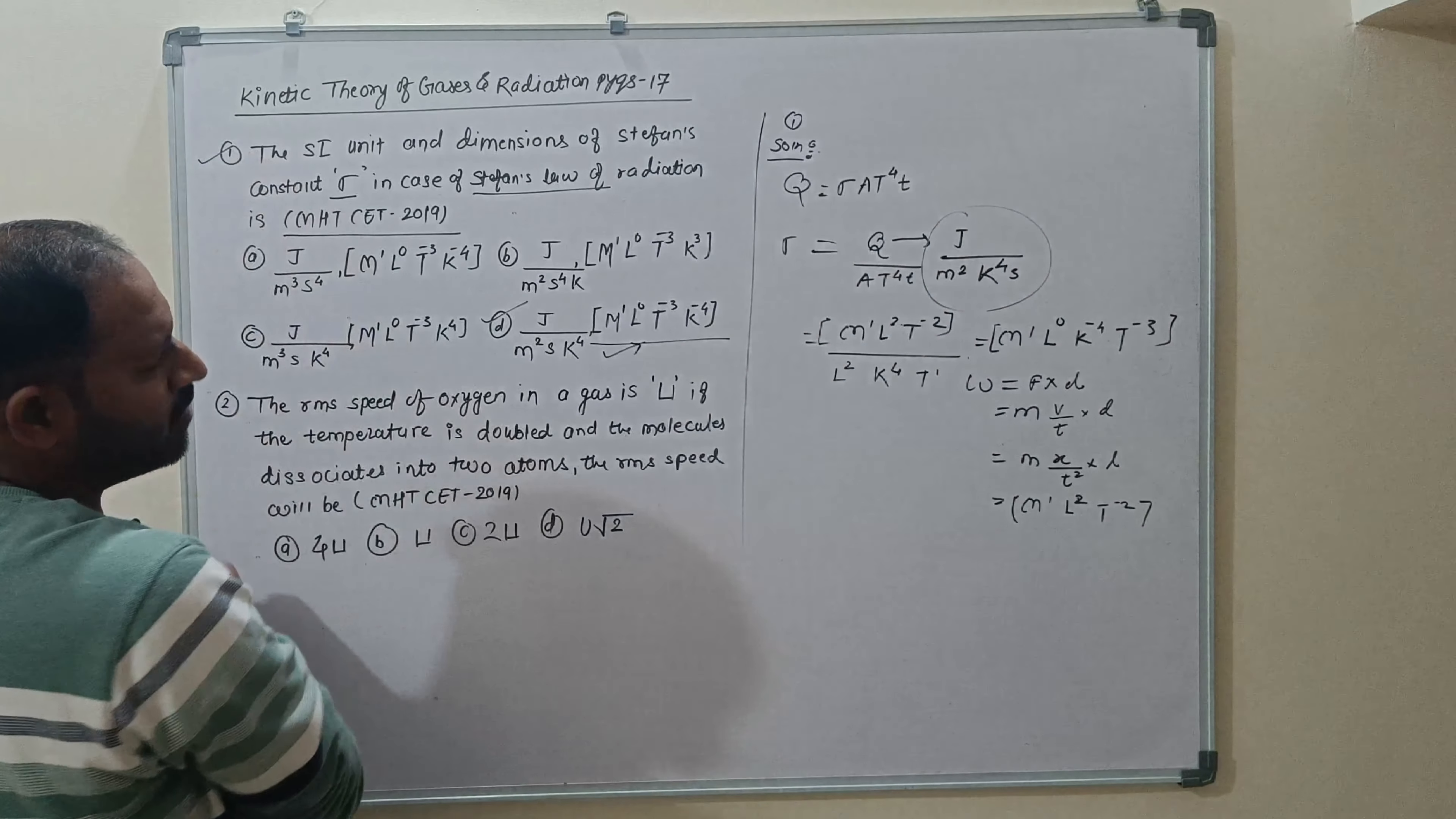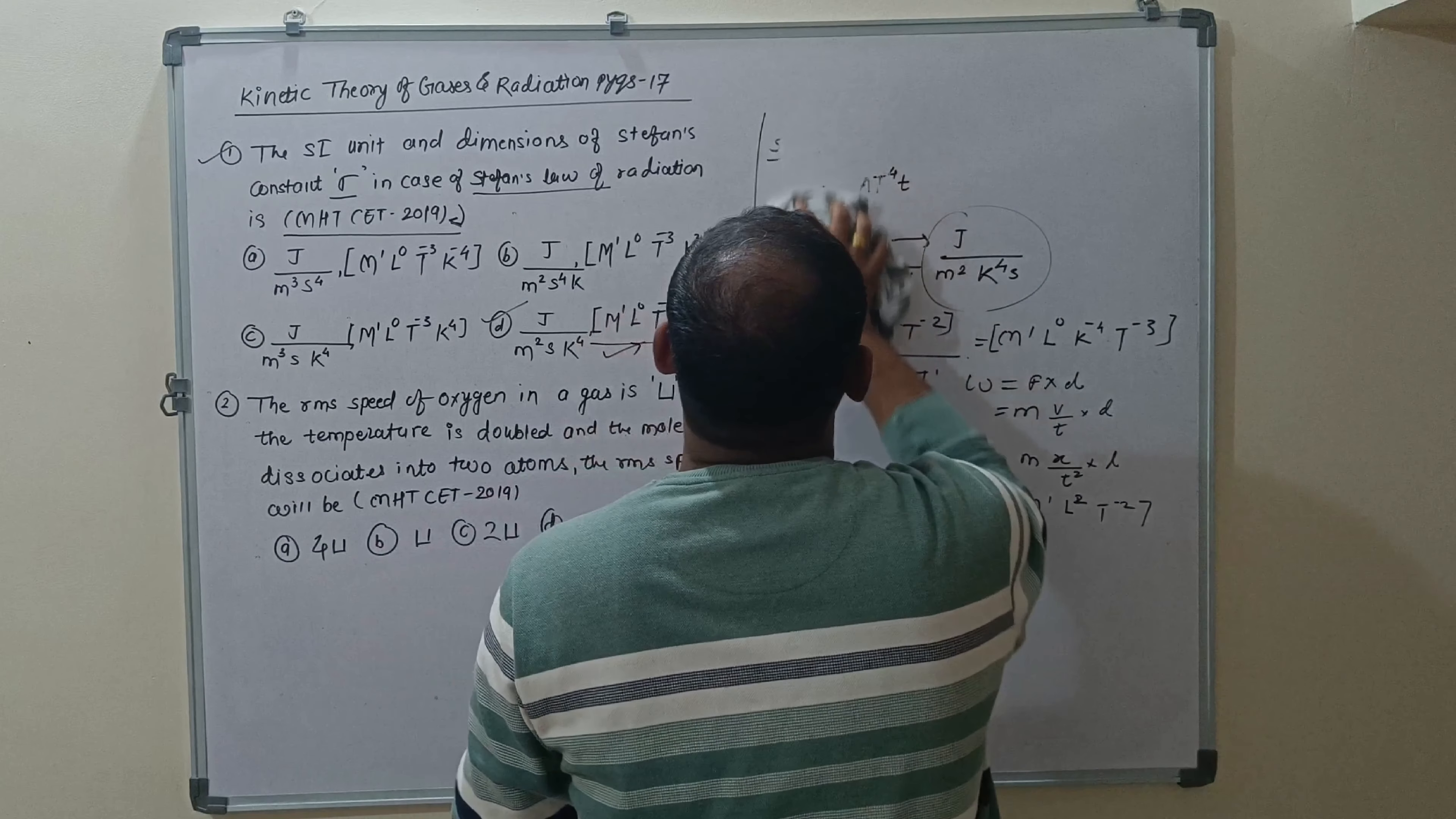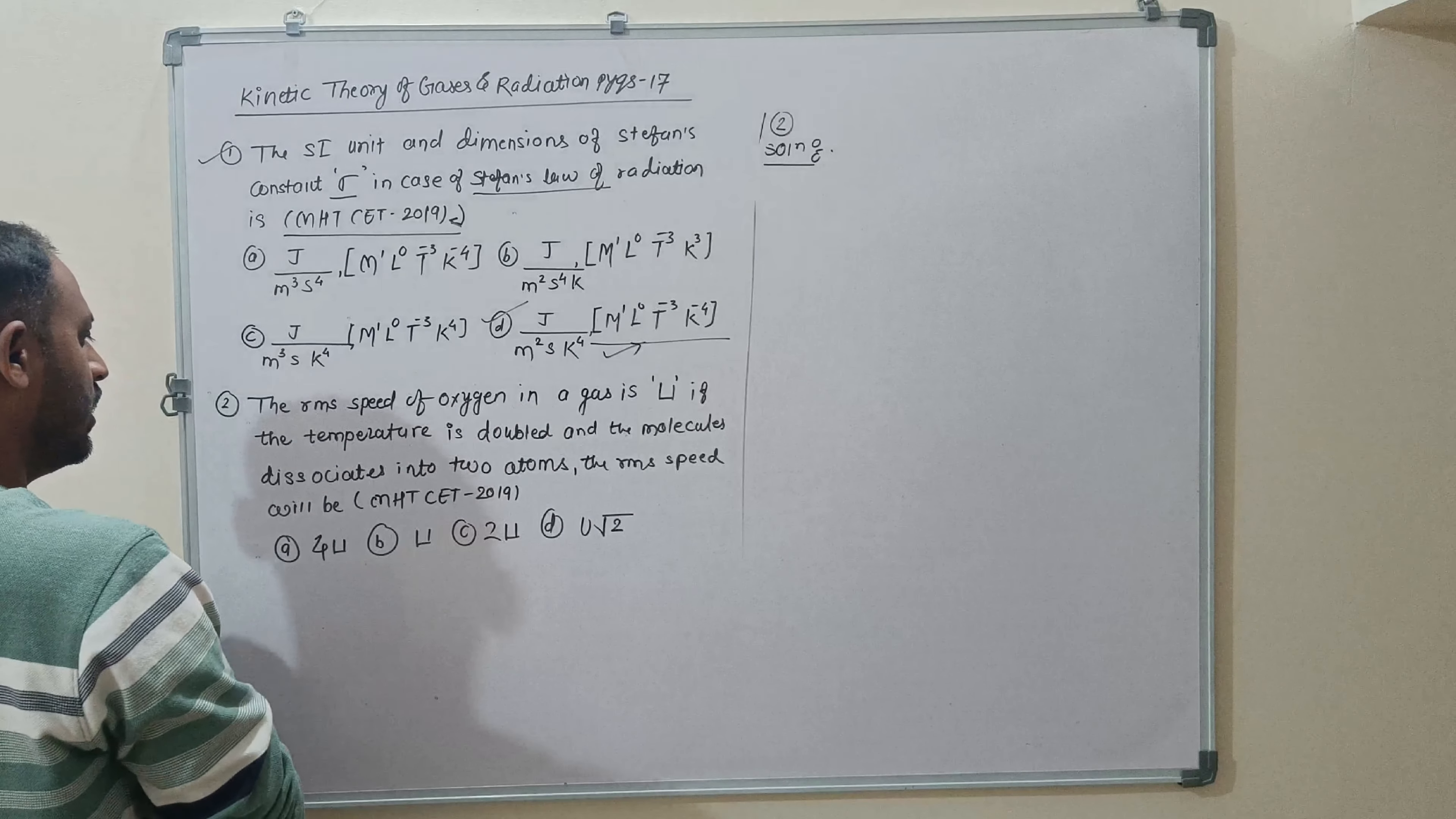So in this way we are able to find the solution for the numerical number first and the question is from the 2019 Maharashtra CET. So we can move to the solution for the second numerical. The concept is RMS velocity.